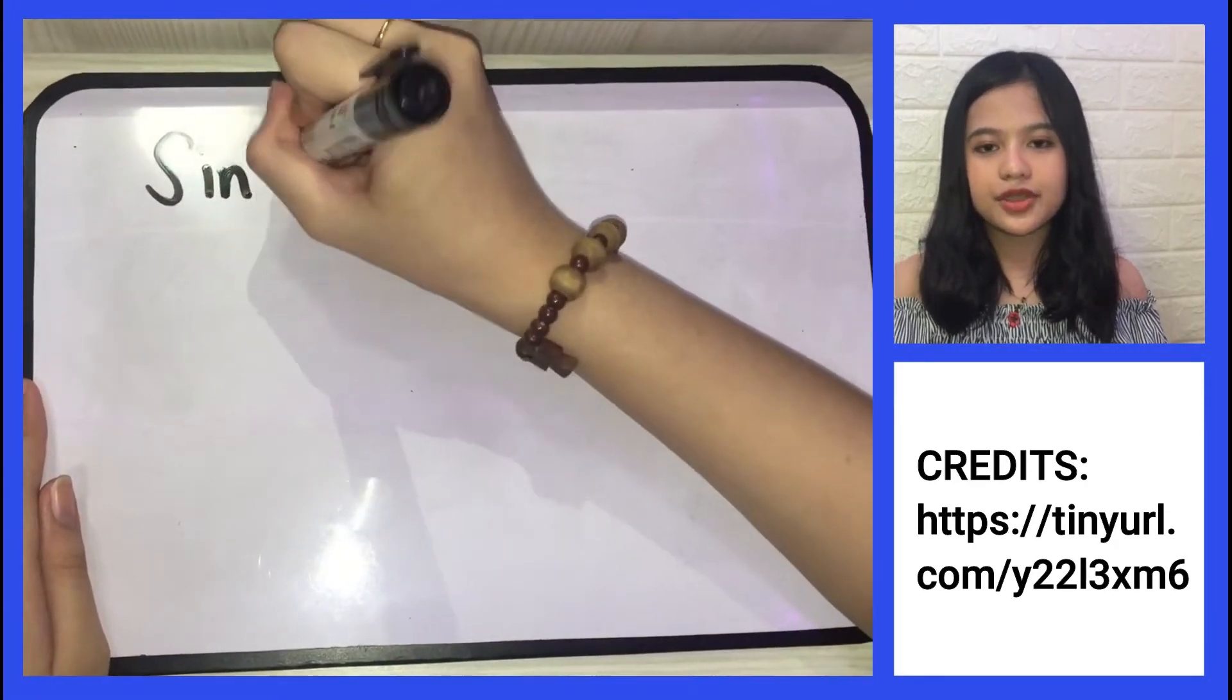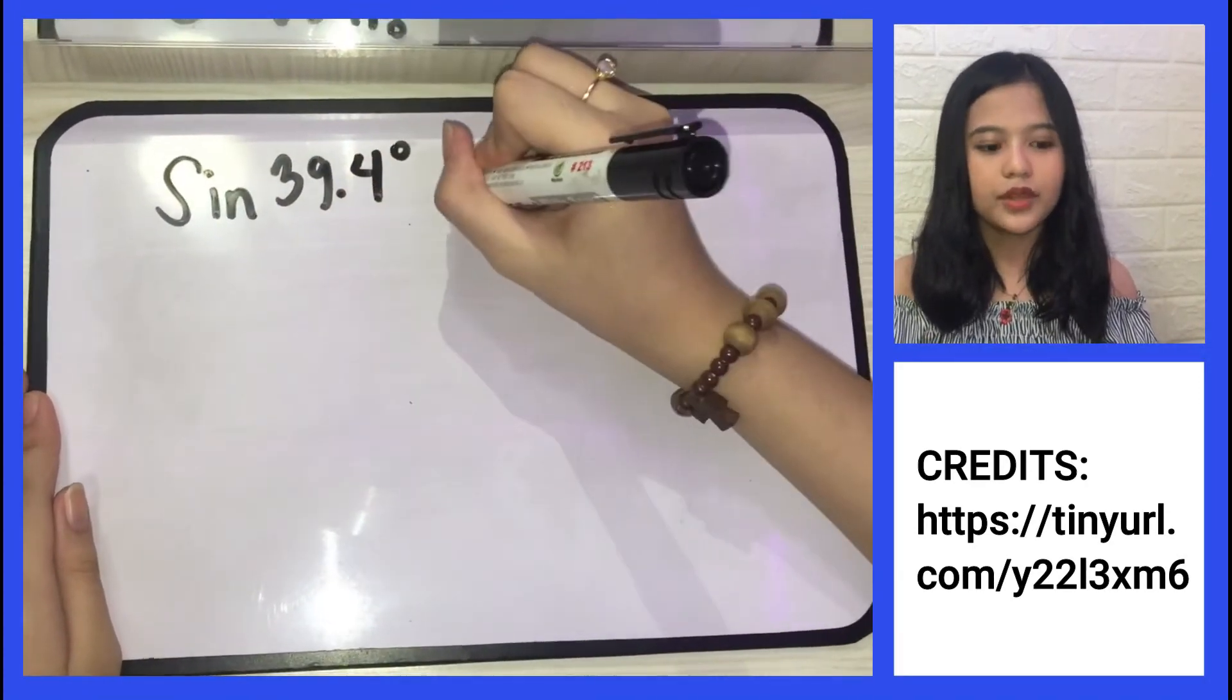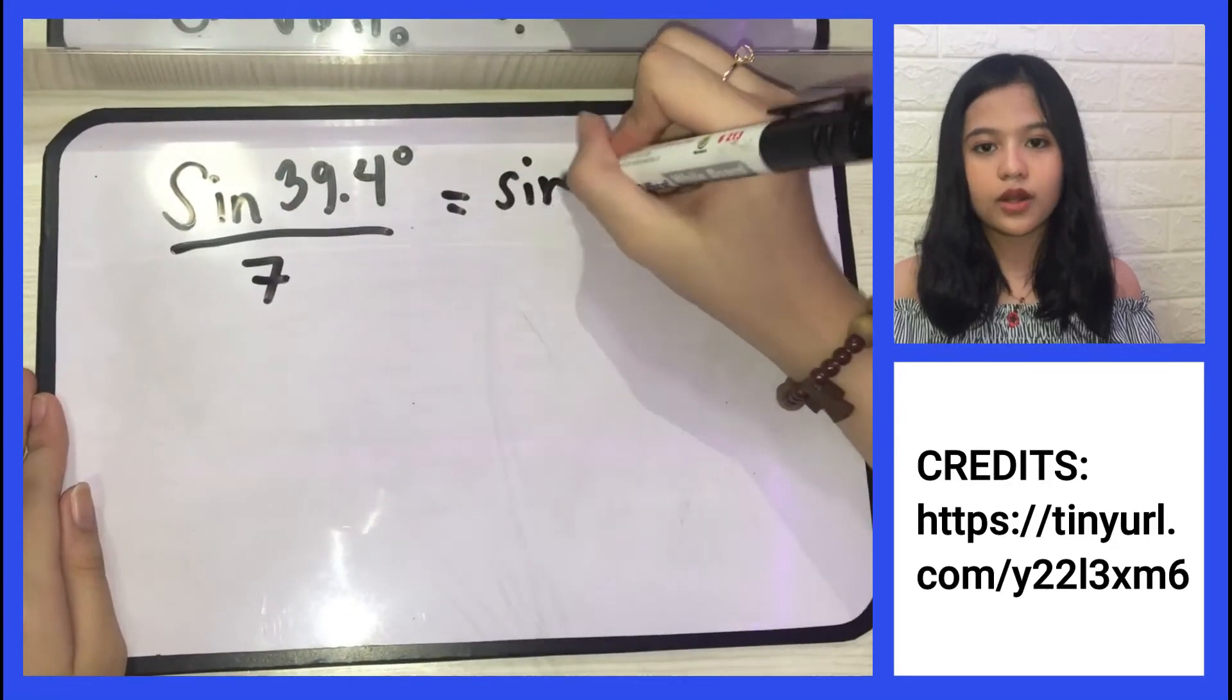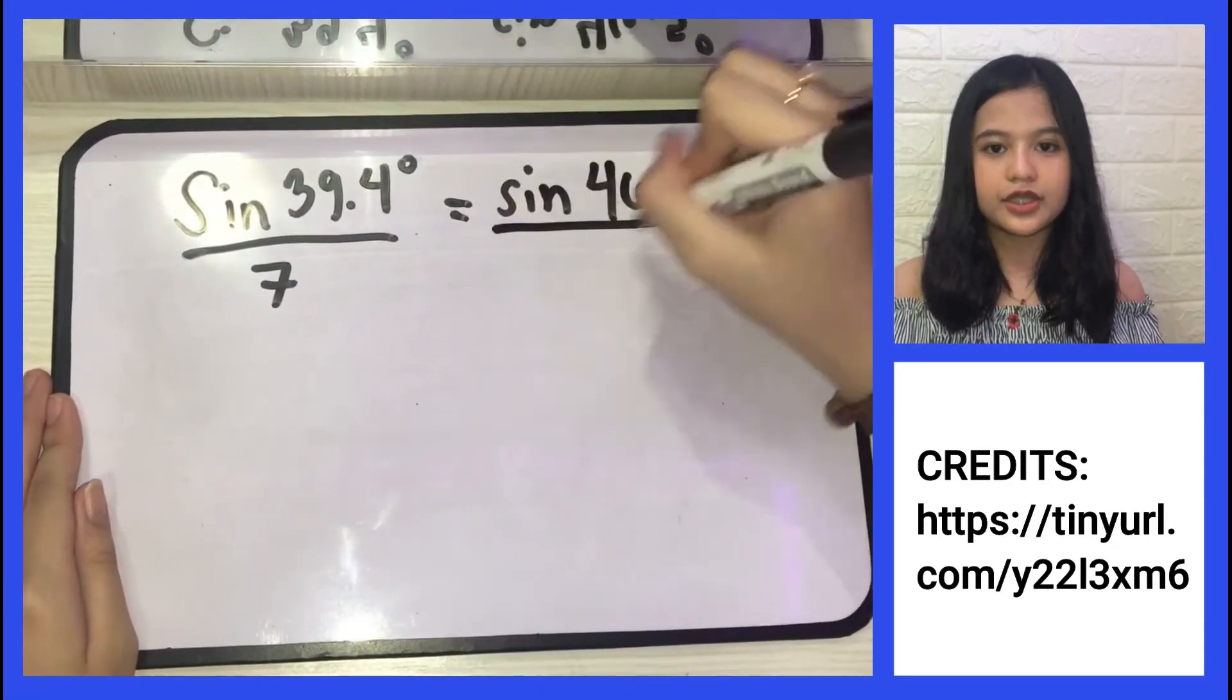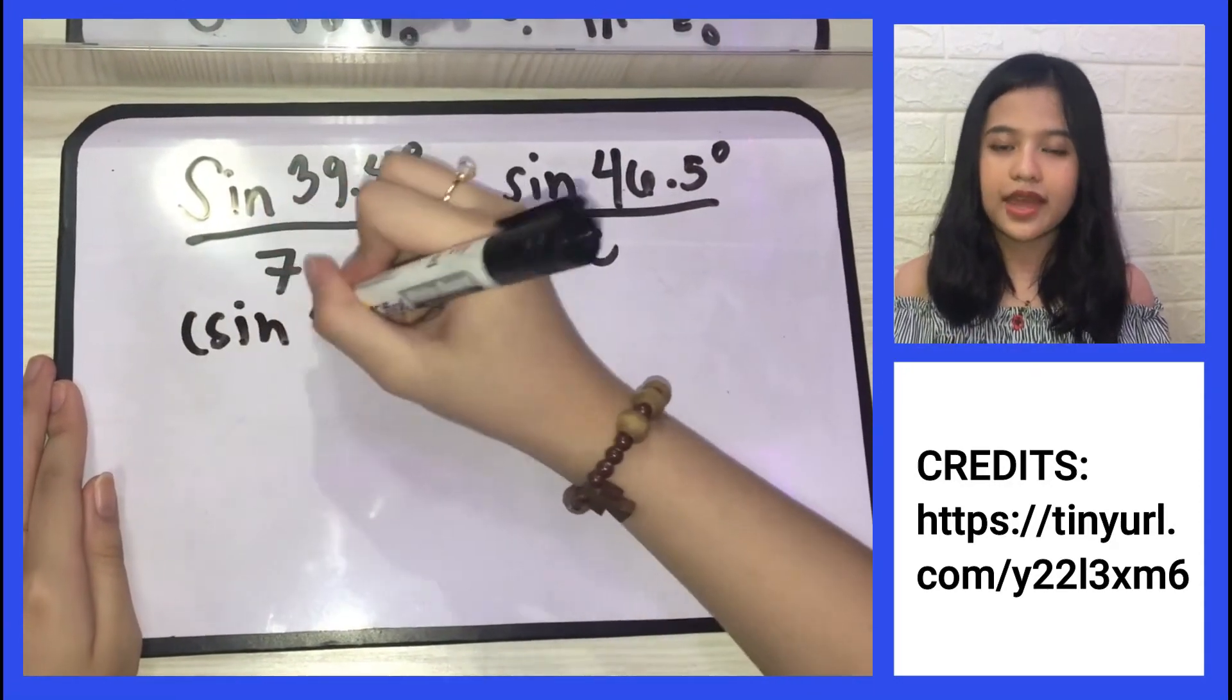The next step is to substitute the given into the formula and it will be sin 39.4 degrees over 7 equals sin 46.5 degrees over C. Then simplify.